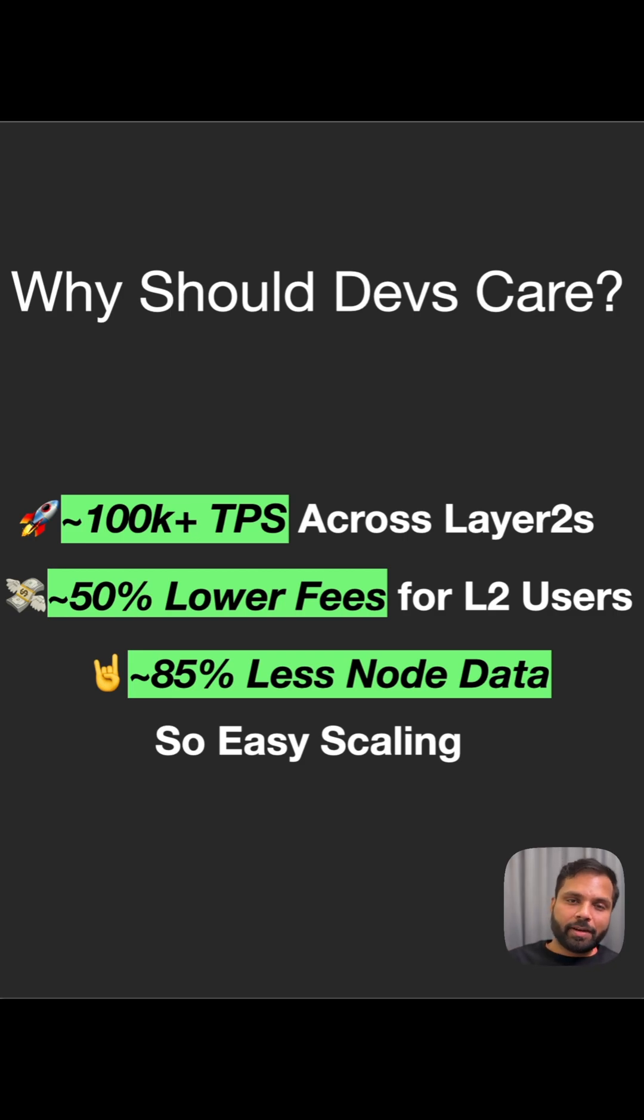And the last one is scalability, where PeerDAS reduces the node bandwidth by 85%, allowing even home setups to keep up.